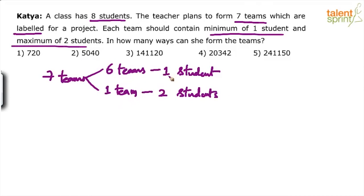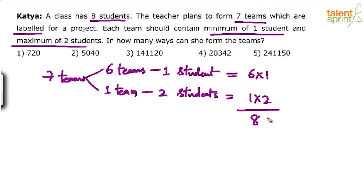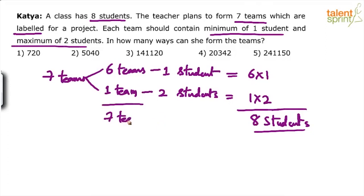So six times one is six, one times two is two, six plus two equals eight students — total eight students and seven teams. This distribution has to be clear: out of seven teams, six teams will have only one student and one team will have two students. Eight students in seven teams — that's what we are trying to do. You very well know that only one team will have two students.